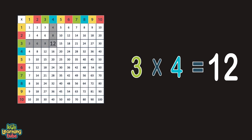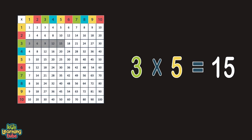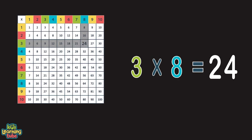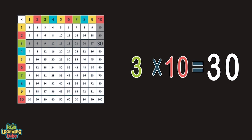You're counting up on the screen: eighteen, twenty-one, twenty-four, twenty-seven, and thirty. Multiplication is a dream. Now we'll be counting by four.